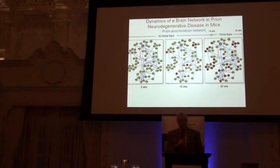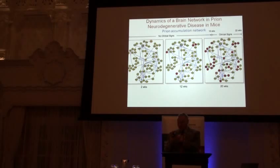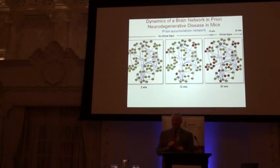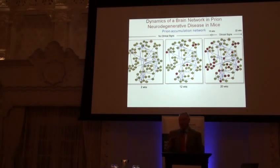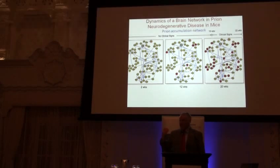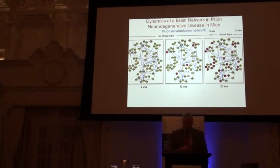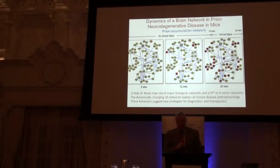Number two, we identified a core of about 300 genes responsible for neurodegeneration. Two-thirds of them mapped into the four major networks, but the other third mapped into six networks no one had any idea were part of this disease — that's the importance of global analyses. When analyzed collectively, those networks explained virtually every aspect of the pathophysiology of the disease, giving detailed mechanistic insights for the first time.